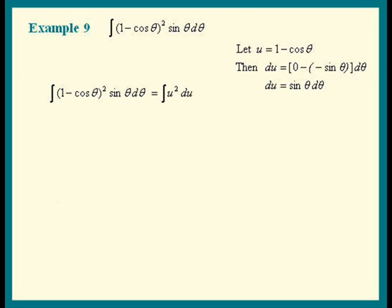The power rule for integration says, add 1 to the power and divide plus C. All we have to do now is put 1 minus cosine theta back in for U and we're done. See how easy that was?